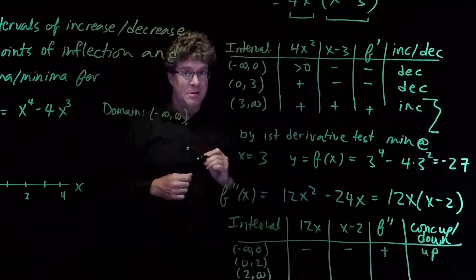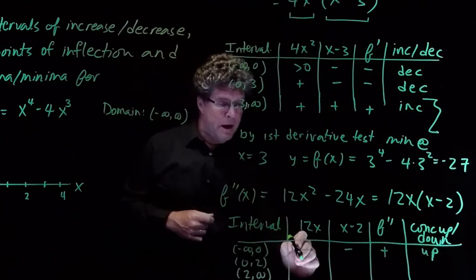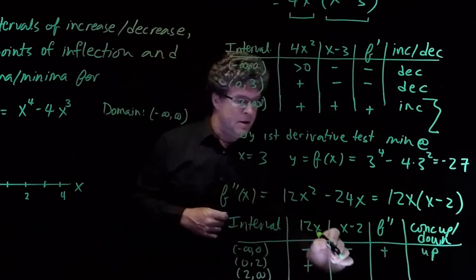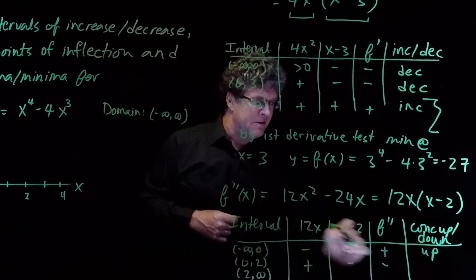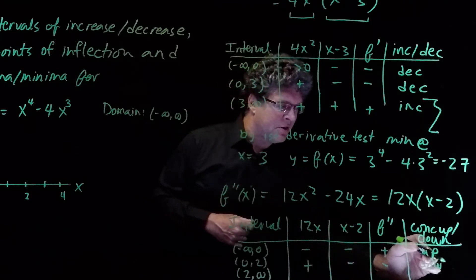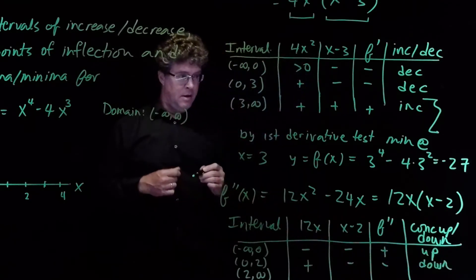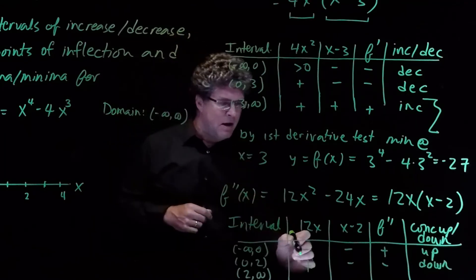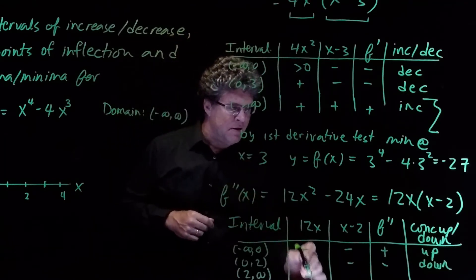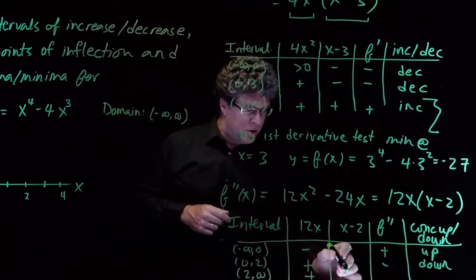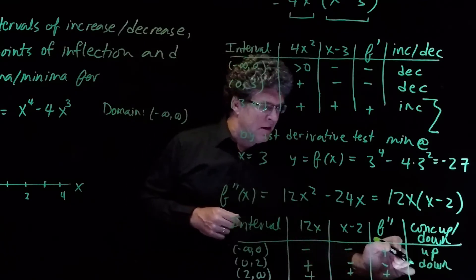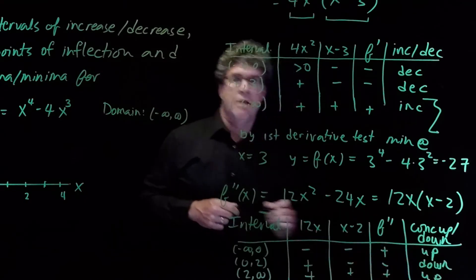On the interval (0, 2), 12x is positive and x minus 2 is negative, so f double prime is negative — concave down, a sad face. Finally, on (2, infinity), 12x is positive and x minus 2 is also positive, so f double prime is positive and we're concave up.